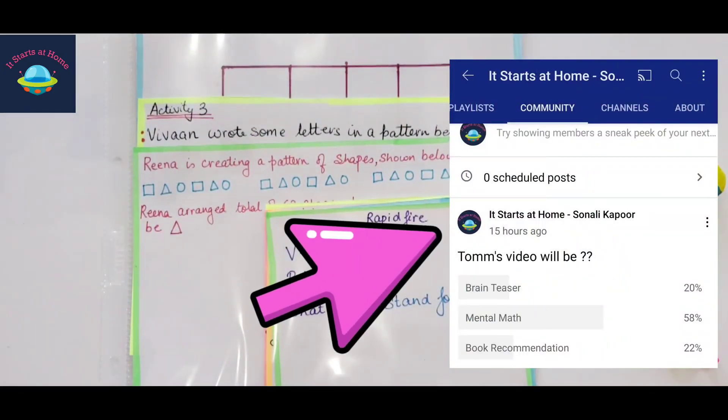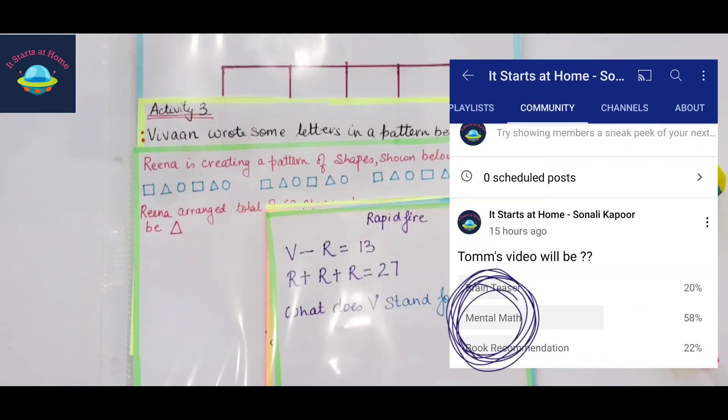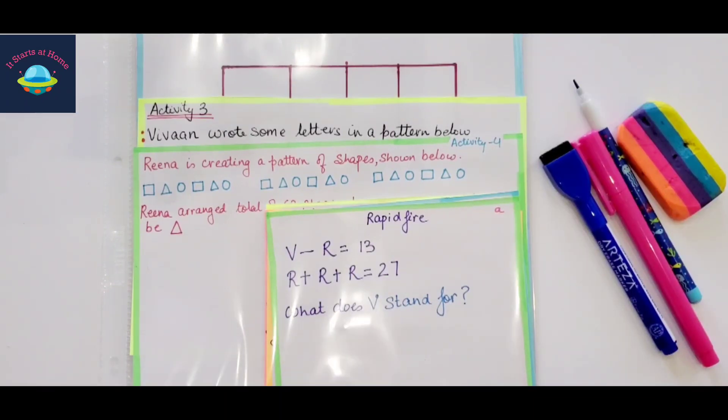In the poll that I took yesterday I had given three options: a brain teaser, book recommendations, and mental maths. Mental maths got the maximum votes, so here I am sharing with you 11 amazing mental maths activities for kids.